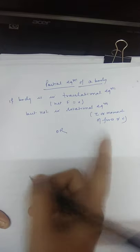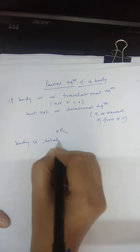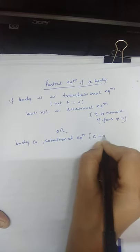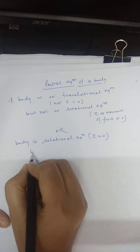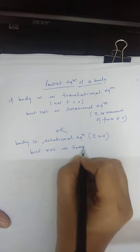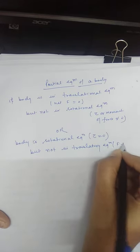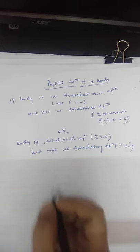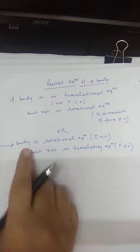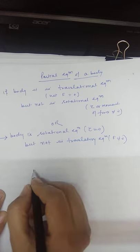The second condition is: the body is in rotational equilibrium, meaning the net torque acting on the system is zero, but not in translatory equilibrium. We will discuss both of these cases. This is the first case: the body is in rotational equilibrium but not in translatory equilibrium.